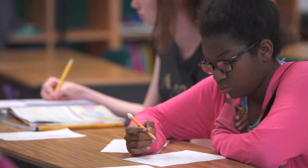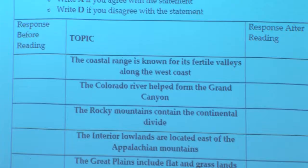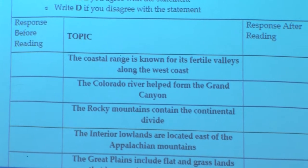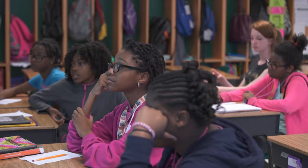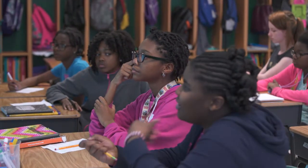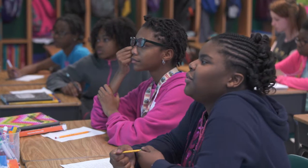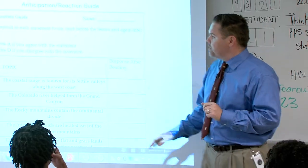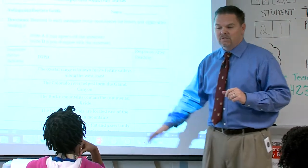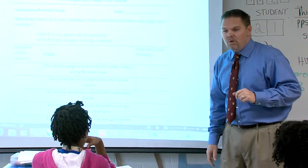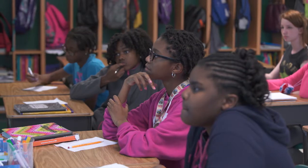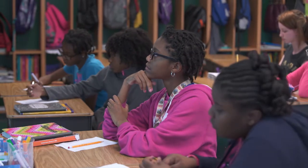Use A if you agree and D if you disagree. Read the first one for us, Jaleigh: 'The coastal range is known for its fertile valleys along the west coast.' So if you agree with that statement, you put an A; if you disagree, you put a D.